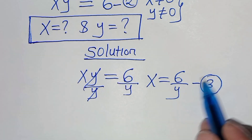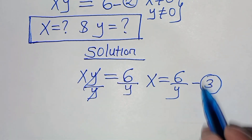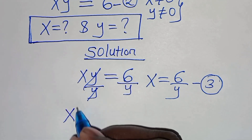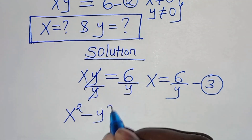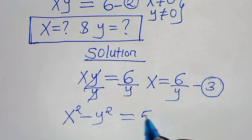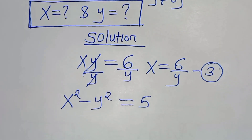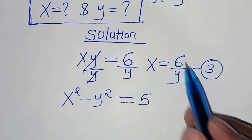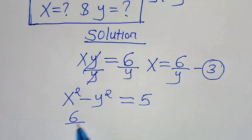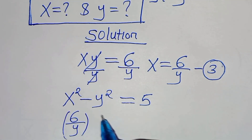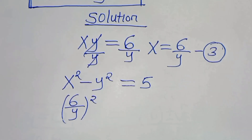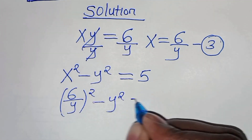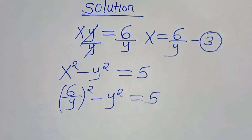Now let's plug equation 3 into equation 1. Equation 1 is x squared minus y squared equals 5. So let's substitute x with 6 over y, so that we have (6 over y) squared minus y squared equals 5.